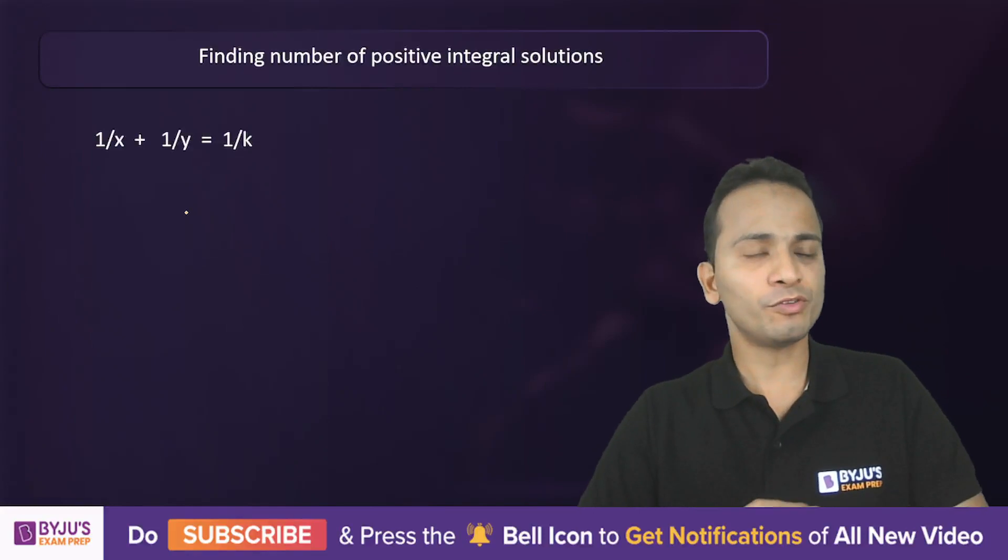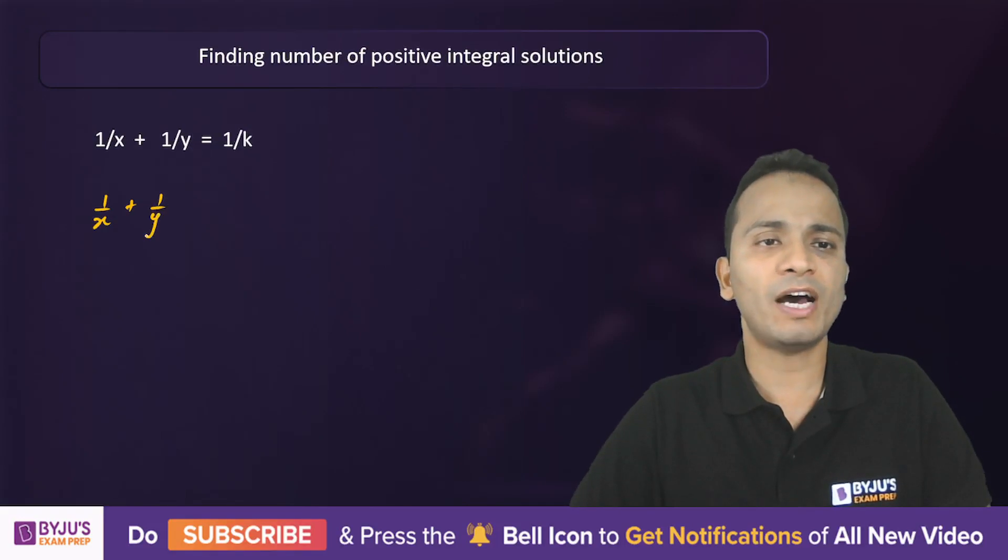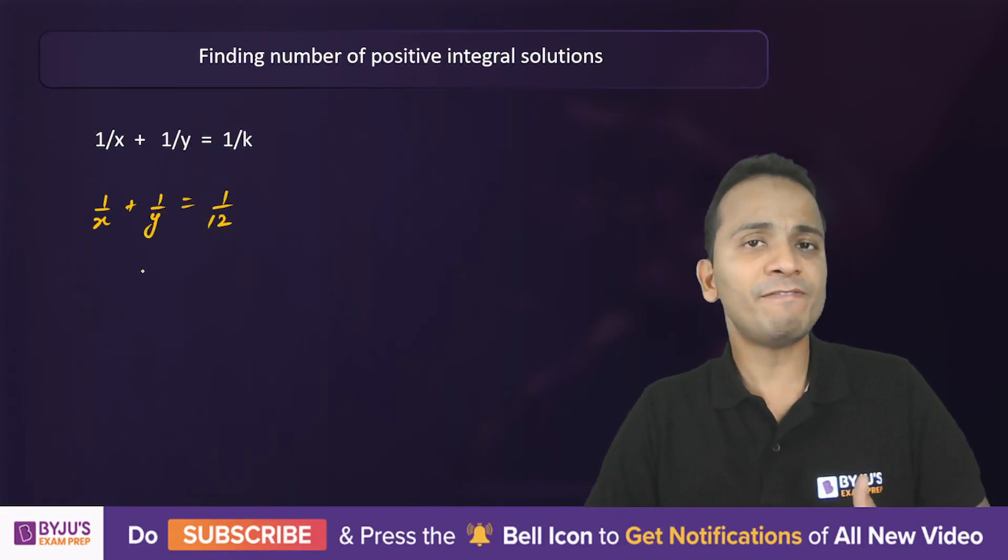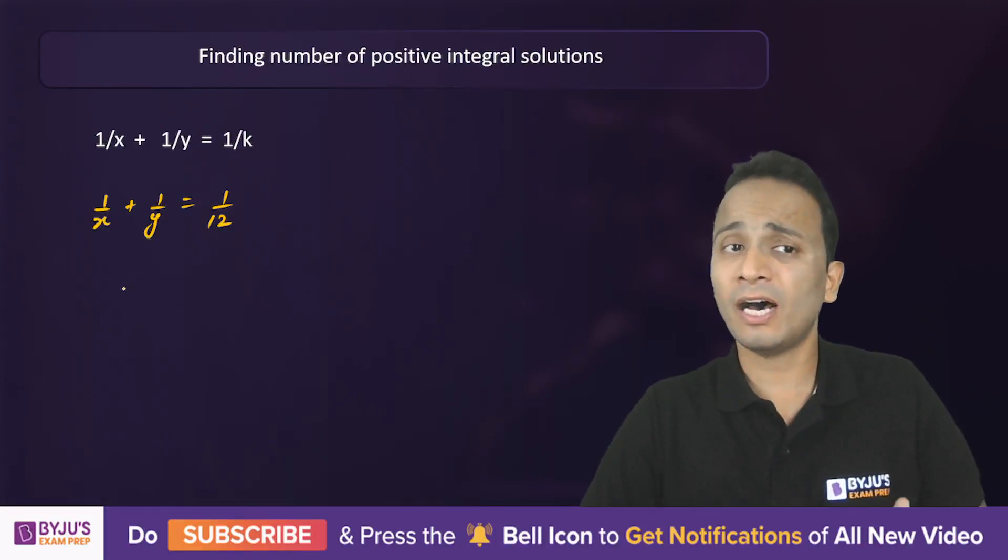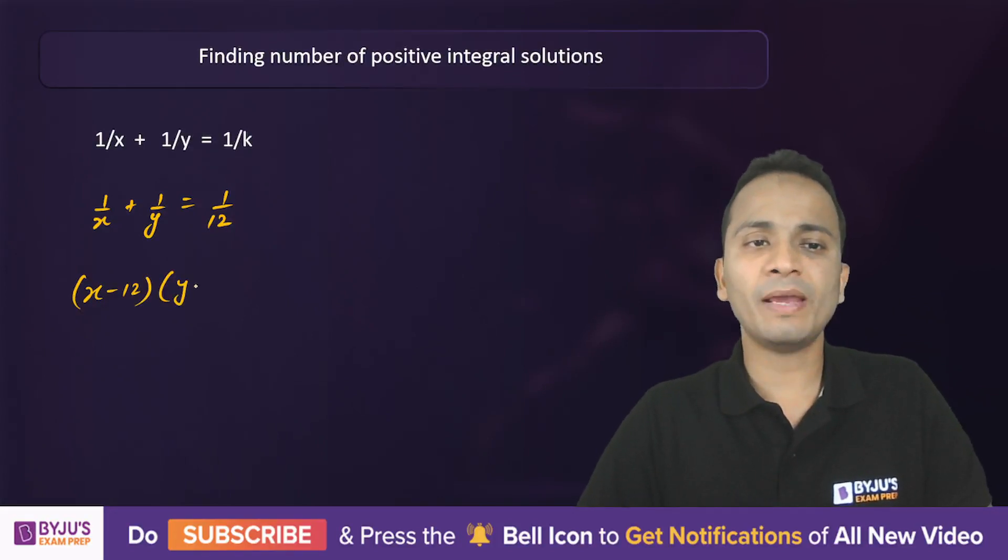First of all, if I take an example, let's say 1/x + 1/y = 1/12. Now if I factorize this equation and write it in another form, this equation can be written as (x-12)(y-12) = 144. Let's work on this first.